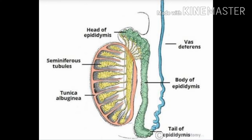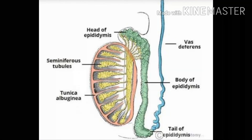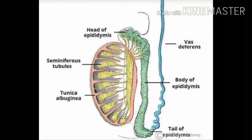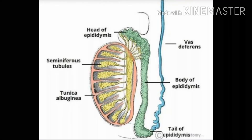Now let's study the structure of the testes. It is divided into many parts: seminiferous tubules, interstitial or Leydig cells, efferent ducts, and epididymis. Seminiferous tubules are highly coiled structures that produce sperms — the process of production of sperms is called spermatogenesis. Interstitial cells, also called Leydig cells, produce hormones like testosterone and they pack around the seminiferous tubules. Efferent ducts are ducts through which mature sperms move from the seminiferous tubules to the epididymis, essentially connecting the testes and the epididymis.